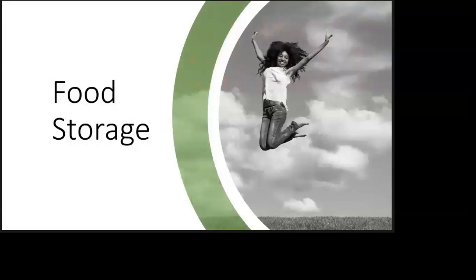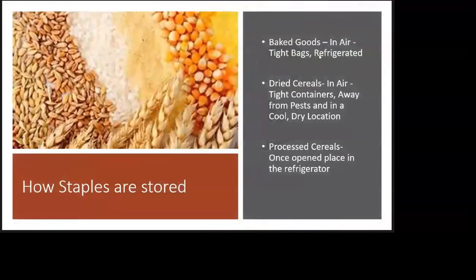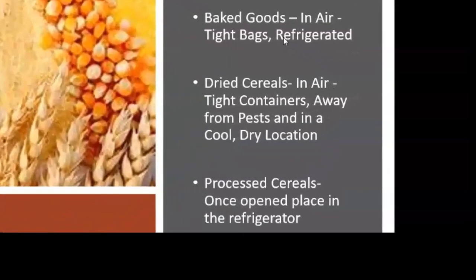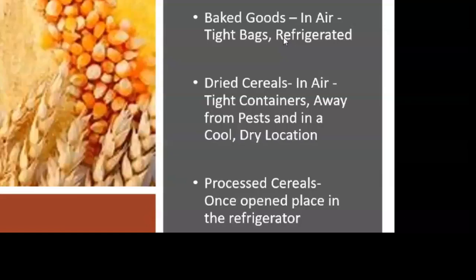For food storage, when you think about staples — grains, cereals, flour, and pasta — some are in dried form and others are made into products like bread and buns. For baked goods, you must put them in airtight bags and refrigerate to increase shelf life. Dried cereals go in airtight containers. If you leave flour open it starts to clump, so keep it away from pests in a cool, dry location. Most of these things are dehydrated, meaning water has been removed, so if exposed to moisture they will start to decompose over time.